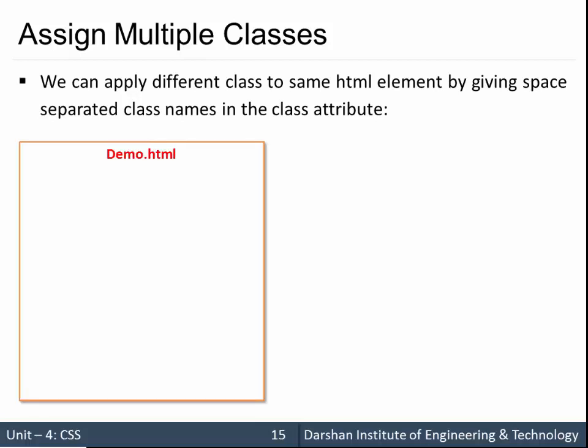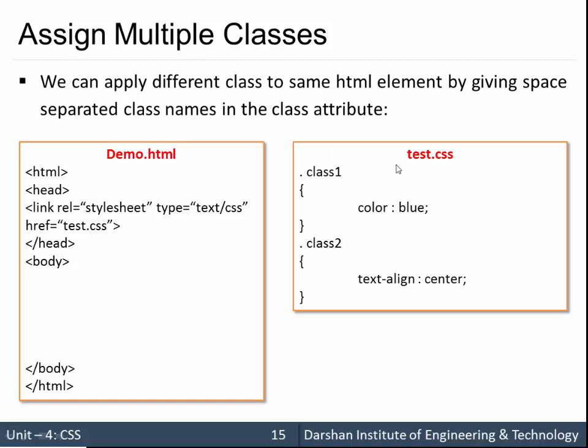For example, we have a demo.html. Inside that we are using an external type of CSS and the name of that file is test.css. In test.css we have used two different classes, class1 and class2. Class1 specifies color blue and class2 defines text align center.